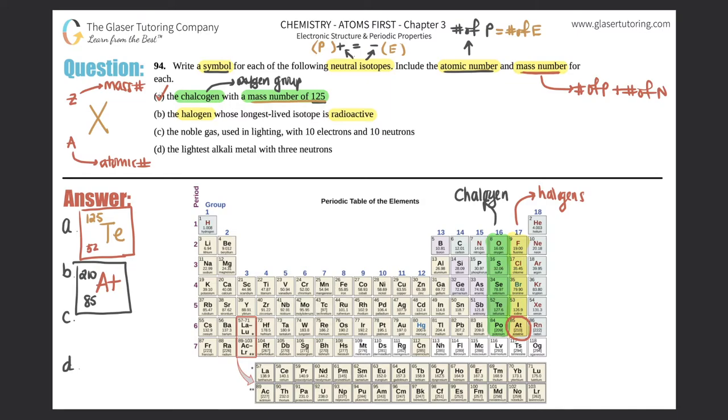Next one, part C: We want the noble gas used in lighting with 10 electrons and 10 neutrons. Where are the noble gases? It's to the right of halogens, so we got three groups in a row. This is the noble gases from helium all the way down to radon. Remember this element is not part of the noble gases as of 2020.